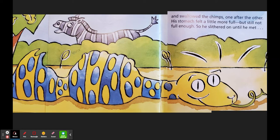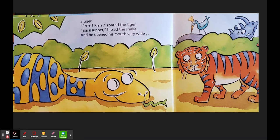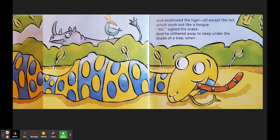So he slithered on until he met a tiger. Can you make a tiger sound? Roar! Roar! roared the tiger. Supper, hissed the snake, and he opened his mouth very wide and swallowed the tiger, all except the tail, which stuck out like a tongue. Do you see it there? Ah! sighed the snake, and he slithered away to sleep under the shade of a tree.